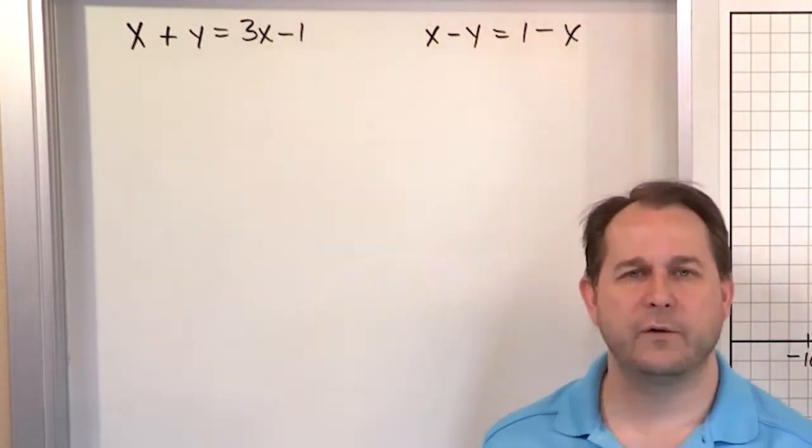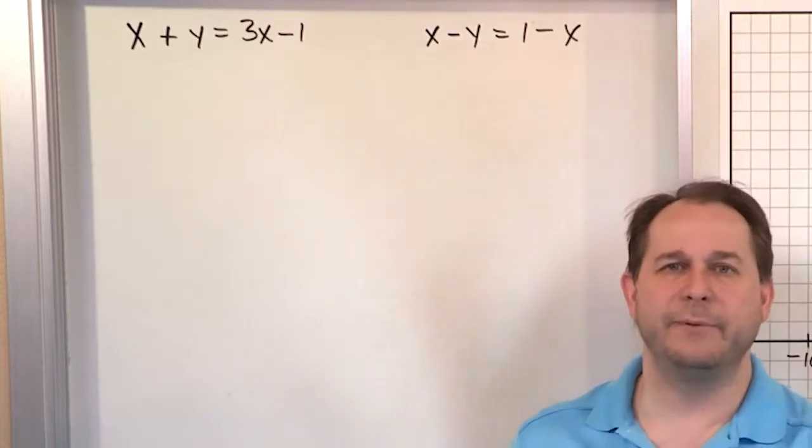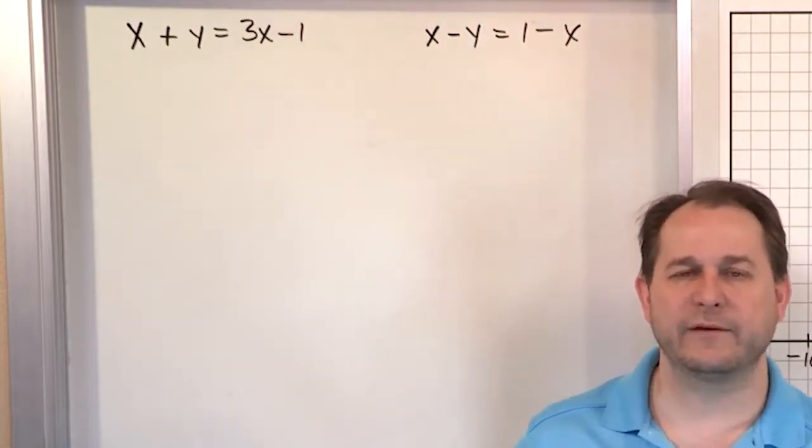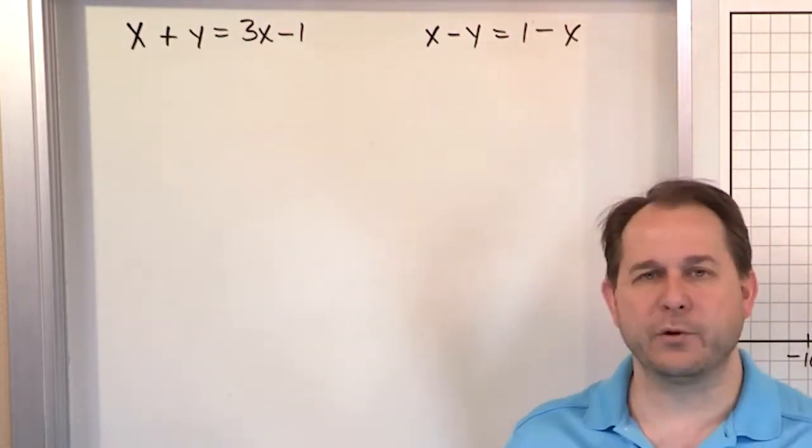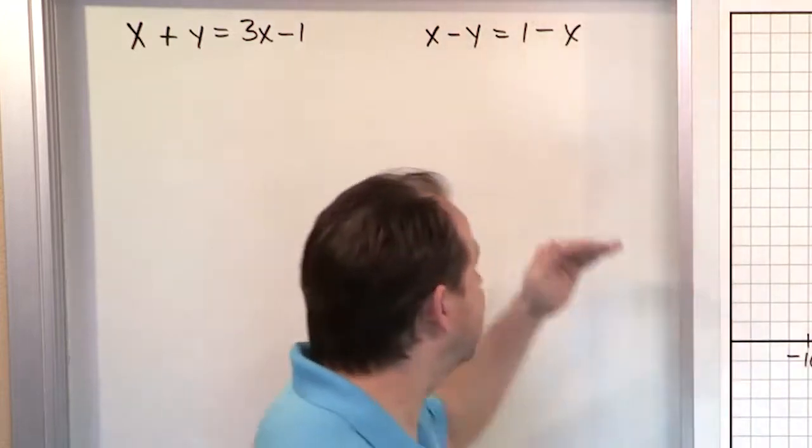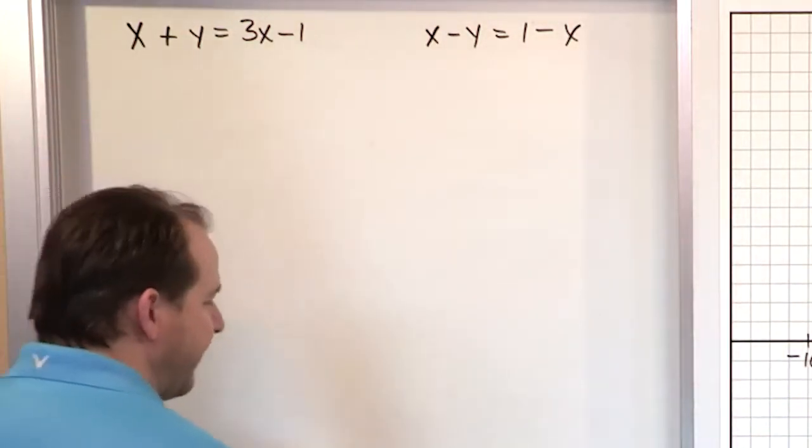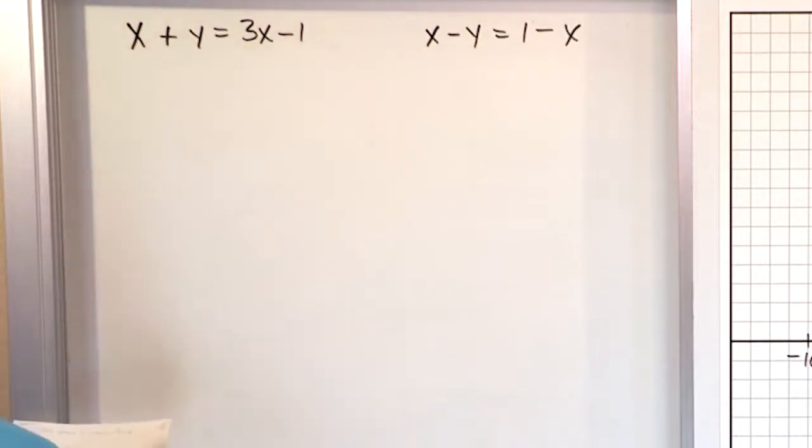If we give you all the equations in mx plus b form, it's just too easy for you to see what's going on because you can see the slope and the y intercept. So a lot of times you'll be given problems that look a little weird, and you have to start by rearranging them.